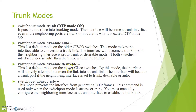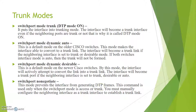'Switchport mode dynamic desirable' is the default mode on newer Cisco switches. It is an active behavior — it will actively attempt to convert the link into a trunk link. The interface becomes a trunk if the neighboring switch is set to trunk, desirable, or auto mode. 'Switchport nonegotiate' is used to prevent the interface from generating DTP frames. DTP, or Dynamic Trunking Protocol, is used for establishing a trunk between two switches.